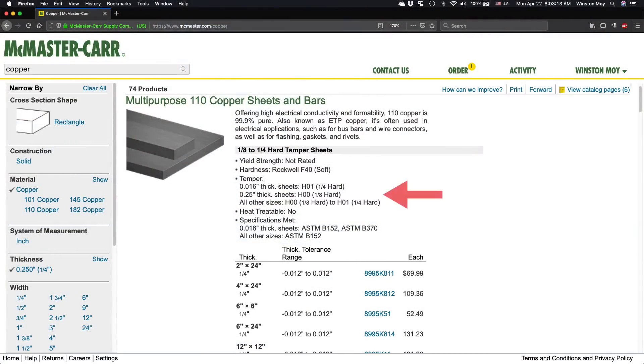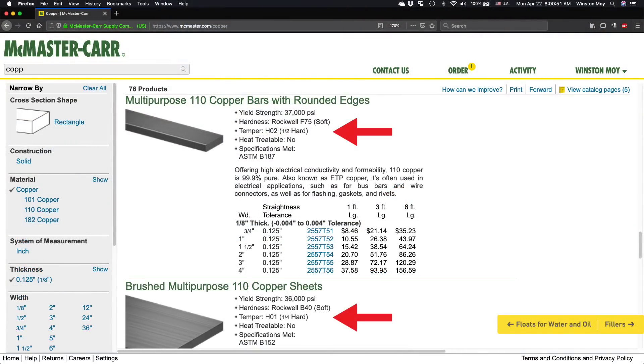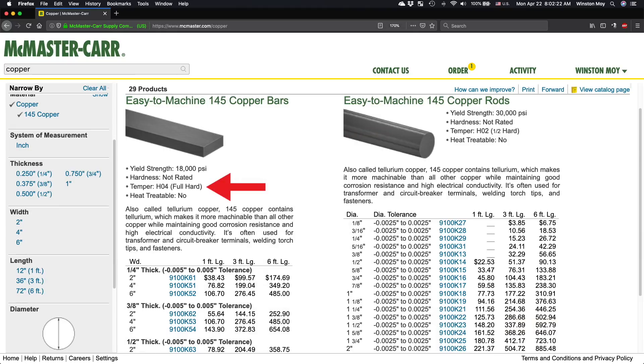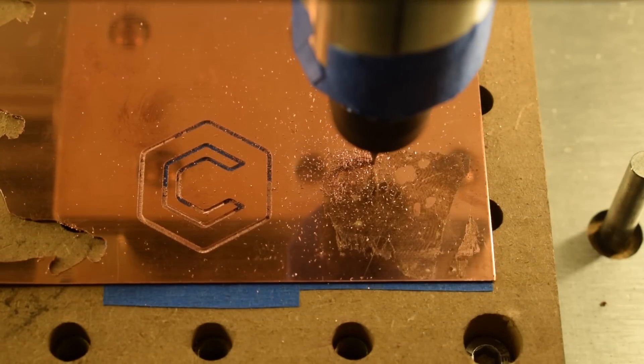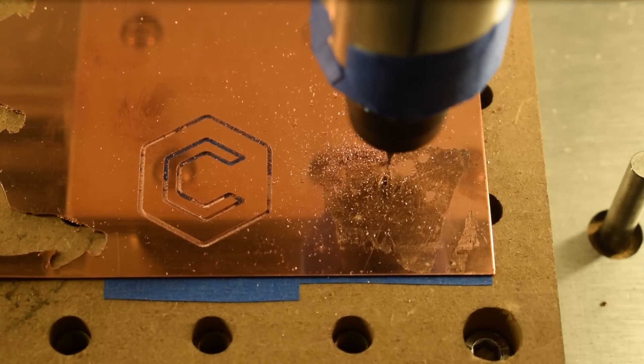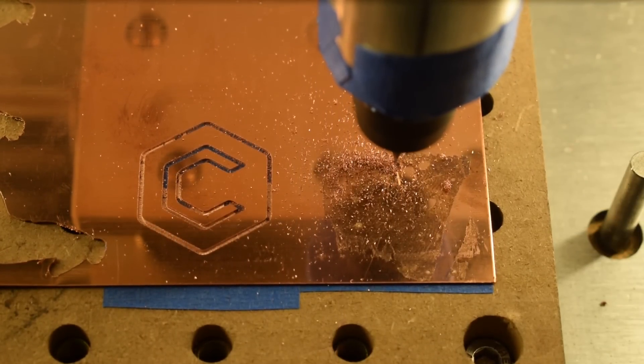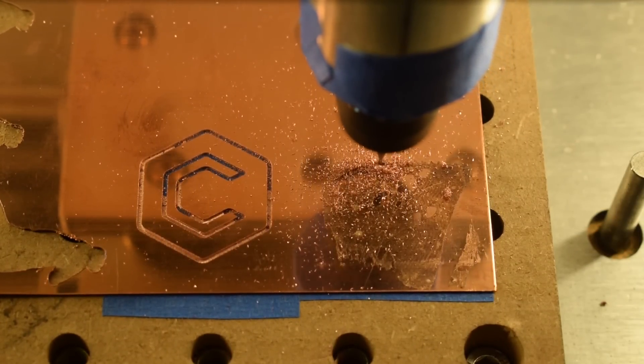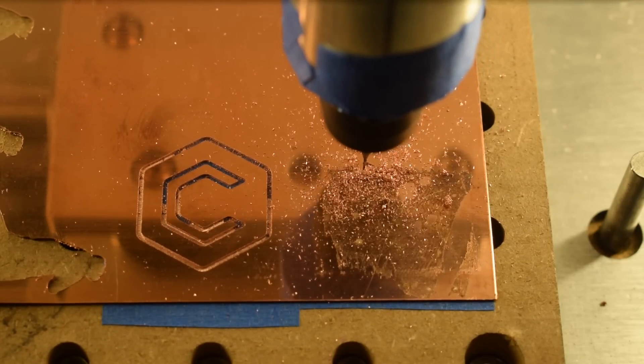You might hear terms like dead soft, half hard, and full hard. For CNC purposes, you will really want to stick to full hard material. Anything softer or annealed will grab at the cutter and leave a noticeable burr on the top edge. The end mill ends up pushing through the material instead of shearing it cleanly, which takes more energy, so not only is it louder, it's also more likely to break your cutter.